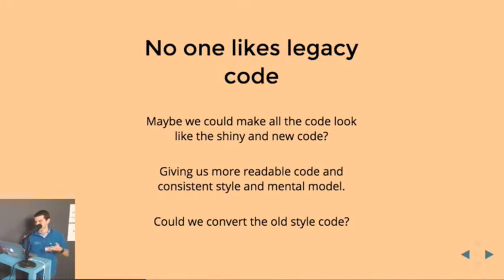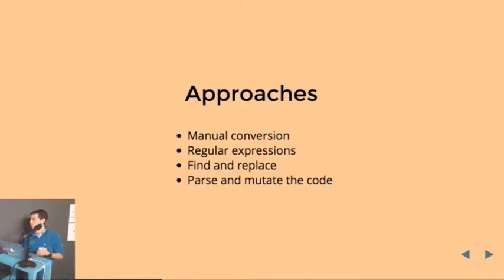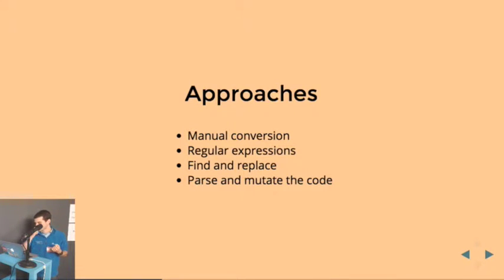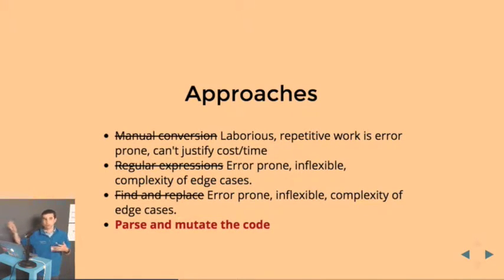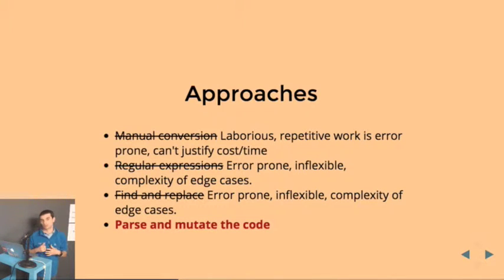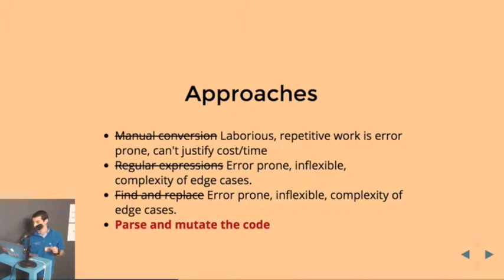So the idea was: could we convert all this old code and just drop the namespace? The only approaches I could come up with were doing it manually, using regular expressions and find-and-replace, or parsing and mutating the code. For us, the first three really weren't going to work. Our context was four or five applications with a thousand-plus classes each. Our clients took those — we had tens of investment banks — and they could end up with hundreds of their own classes. There's no way we could ask anyone to do this by hand. Human beings get bored doing the same work over and over and will introduce errors. Regular expressions and find-and-replace were never going to be flexible enough. So the only option was to parse and mutate the code.